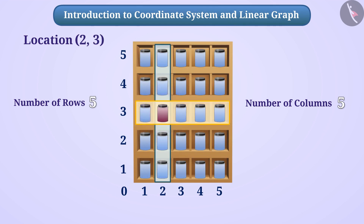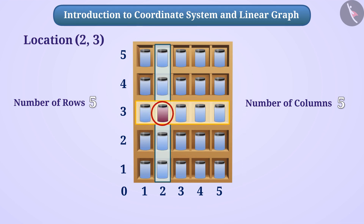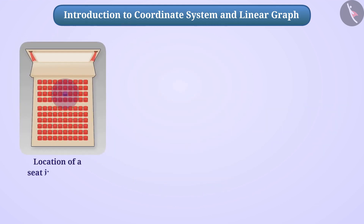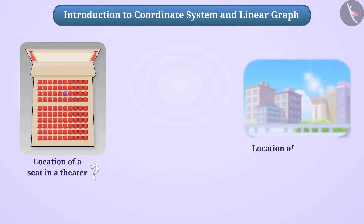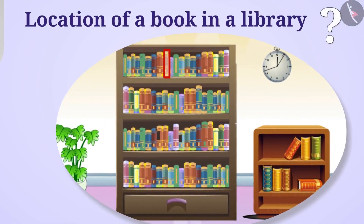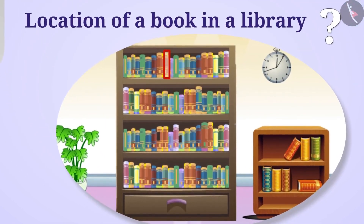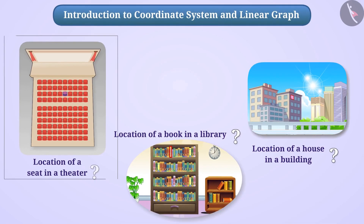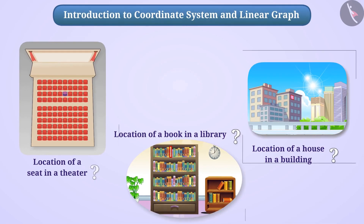This understanding of determining the location in a plane helps us in many situations, such as to find the exact location of a seat in a theatre, to indicate the correct location of our house in a building, to indicate the correct location of a book in a library, etc. In all these situations, we unknowingly use the coordinate system.